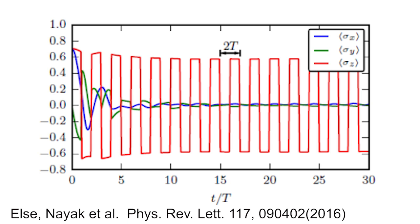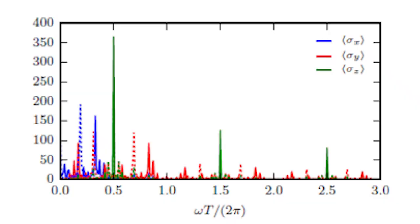So this one is not Google's results, this is a theoretical result. They do a Fourier transform of sigma x, sigma y, and sigma z. And you can see this distinct peak of sigma z at 0.5, which means the frequency of the response is half of the frequency of the driving field. So this is the very distinct characteristic of the discrete time crystal.